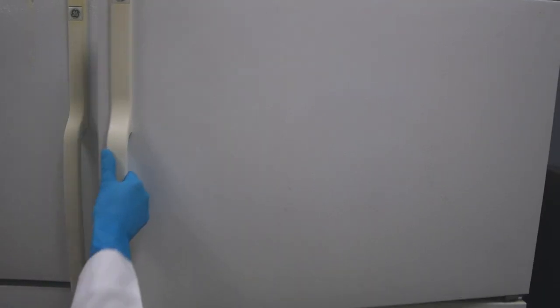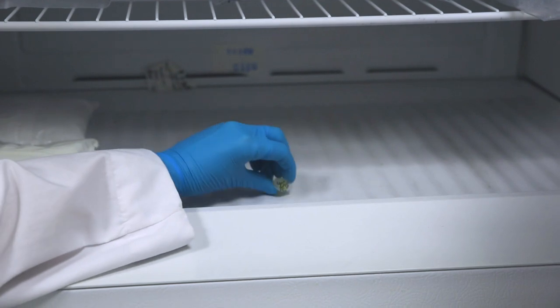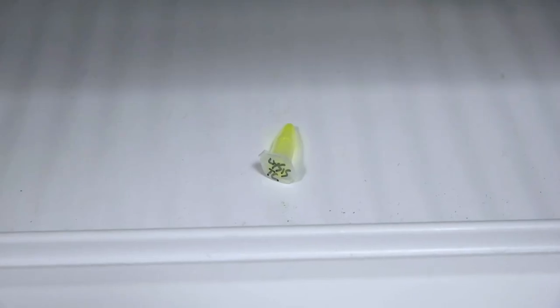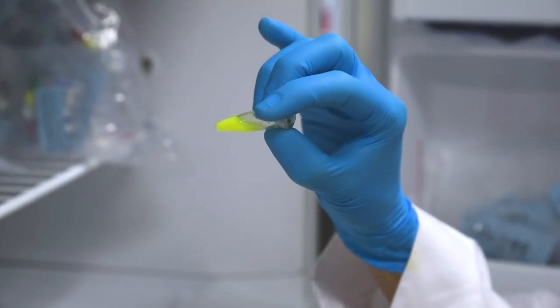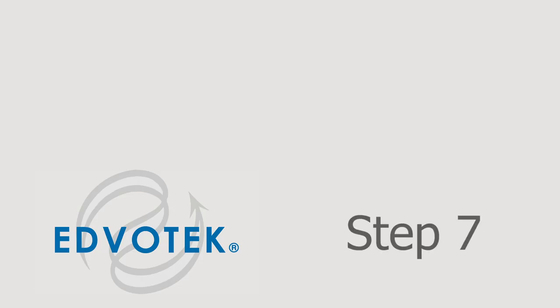Step 6: Place your microcentrifuge tube containing the GFP cells into a minus 20 degrees Celsius freezer for 15 minutes or until frozen. Lay the tube on its side to ensure rapid freezing.